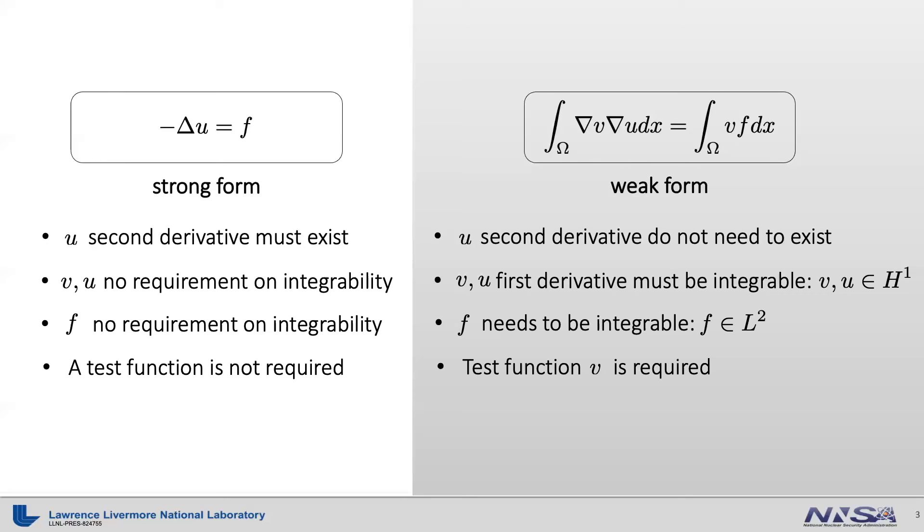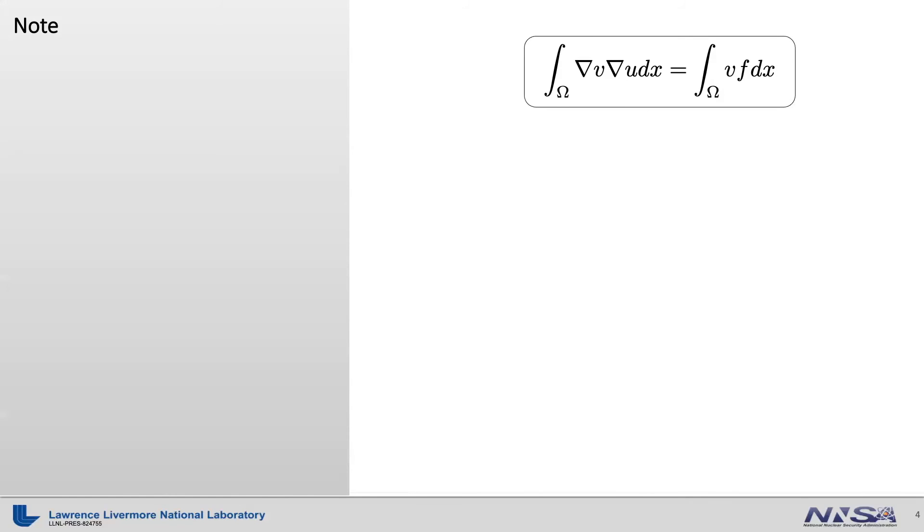Alright, now the finite element method builds its foundation on the weak form. The finite element method predefined what U and V functions can be. Usually, they are predefined as a linear combination of some known functions φ. Note that φ functions depend on the position variable X, and they are predefined, so they are known. On the other hand, the U sub K and V sub J are unknown scalar values. These scalar values can be considered as finite element coordinates. Therefore, the derivative of U with respect to the position X can be done by taking derivative of φ functions. Likewise, for the derivative of V functions also.